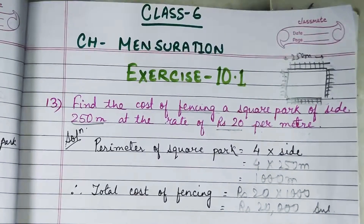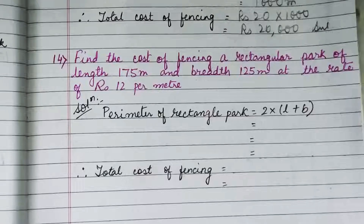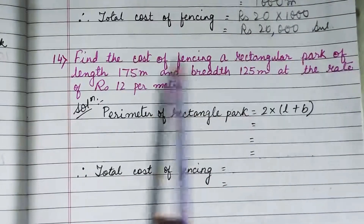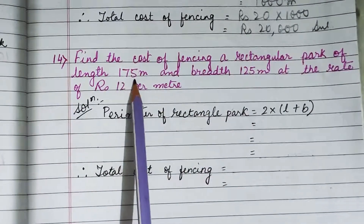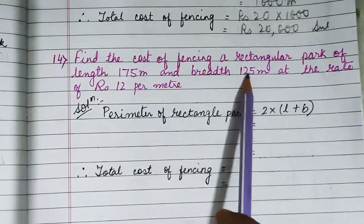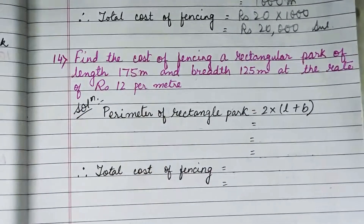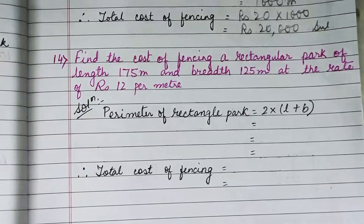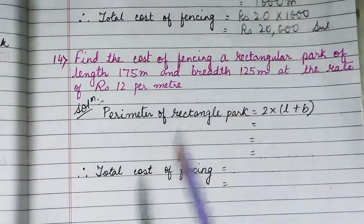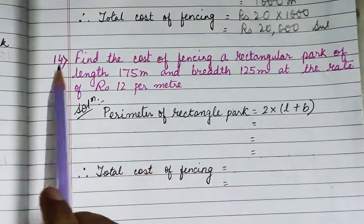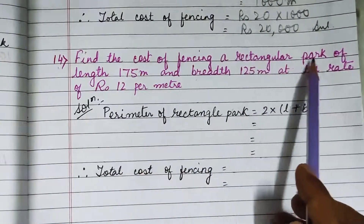Now let us see question number 14. It says: find the cost of fencing a rectangular park of length 175 meters and breadth 125 meters at the rate of rupees 12 per meter. Questions 13 and 14 are similar — the only difference is question 13 has a square park and question 14 has a rectangular park.